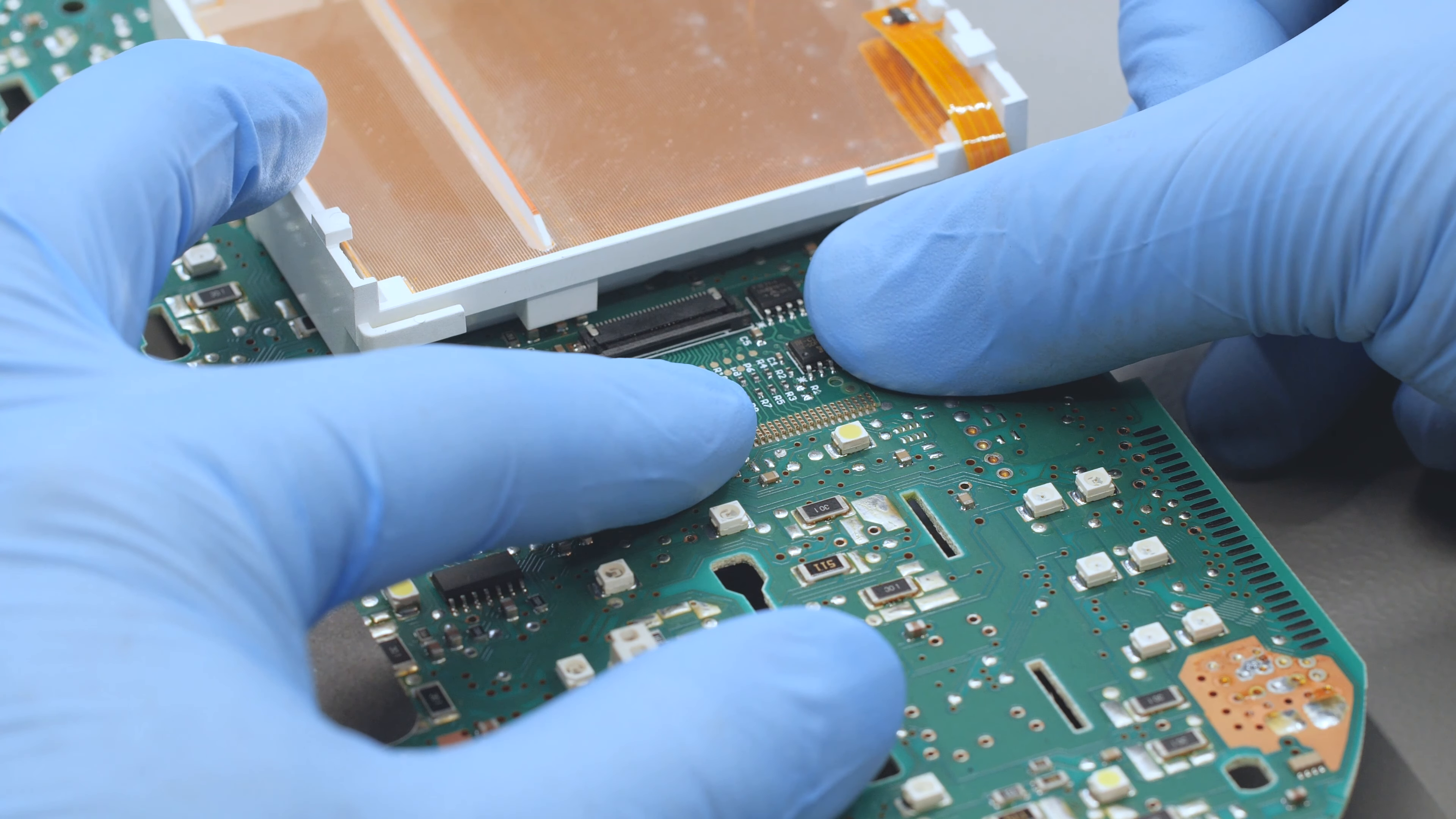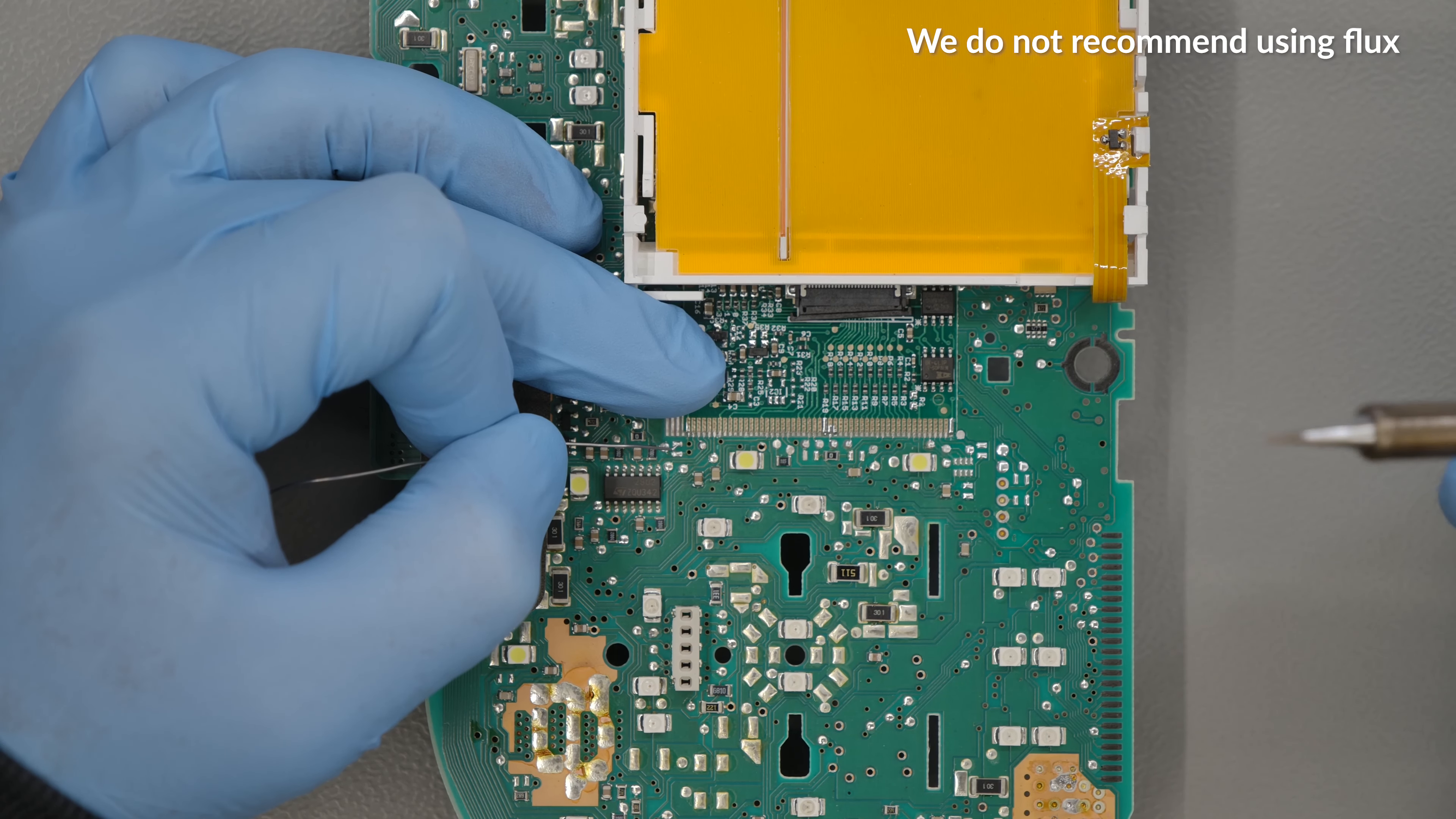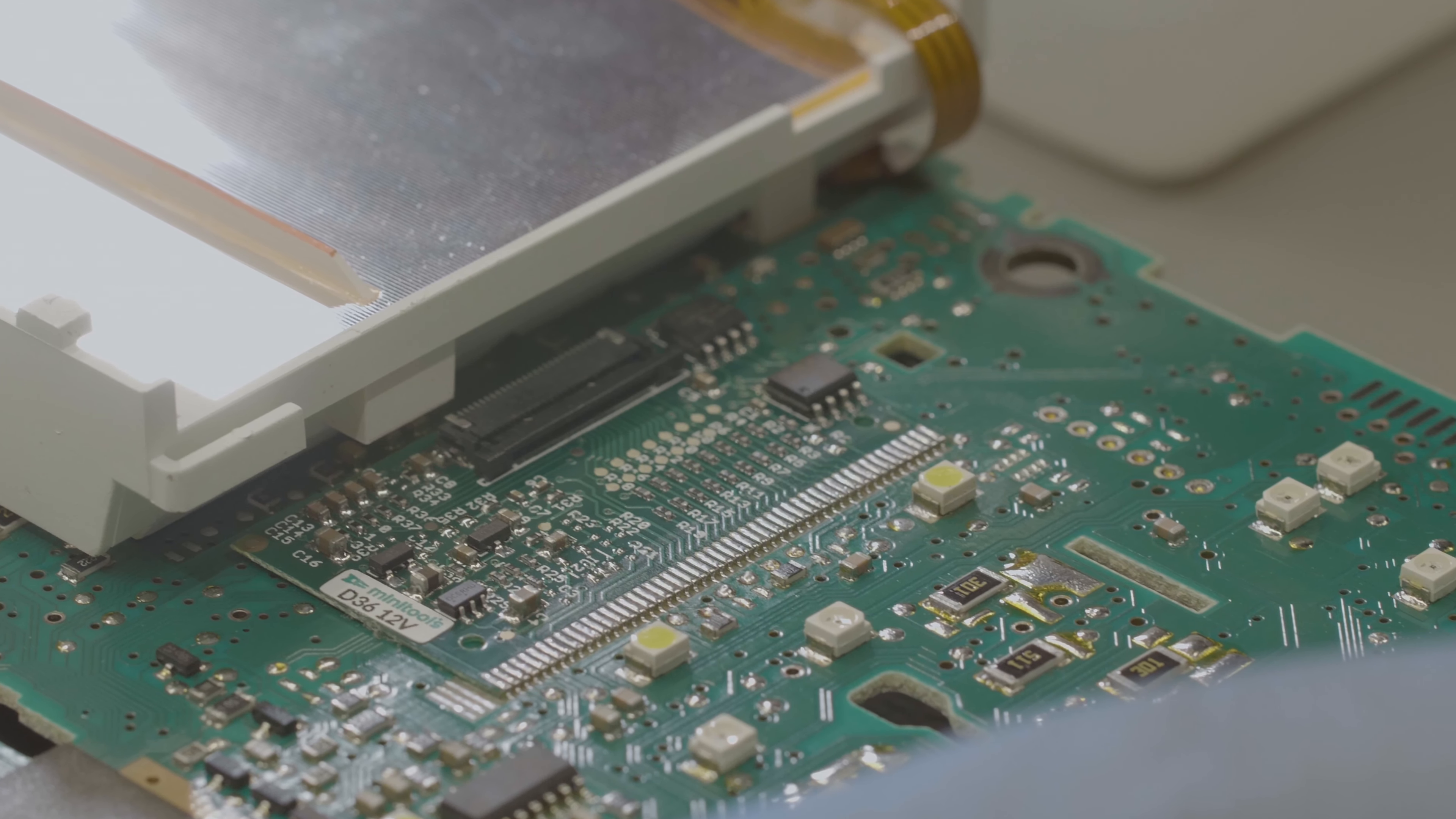Use a soldering iron to attach the PCB at several points, then solder pin by pin. Clean with solvent. Check you have carefully soldered each contact.